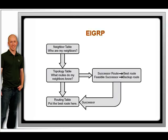EIGRP maintains three tables: the neighbor table, the topology table, and the routing table.